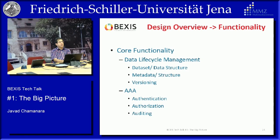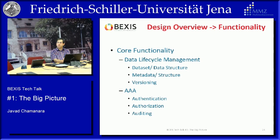For the functionality, we have core functionality mostly around data lifecycle management — datasets, data structure, metadata, versioning, and related things. With AAA (Authentication, Authorization, and Auditing) as part of the core system, no module should be able to bypass authentication, do something without authorization, or act silently if auditing is required. For example, if you are logging every delete, no module should be able to delete something without recording that action. These policies are set in the main core so no module can override or bypass them.